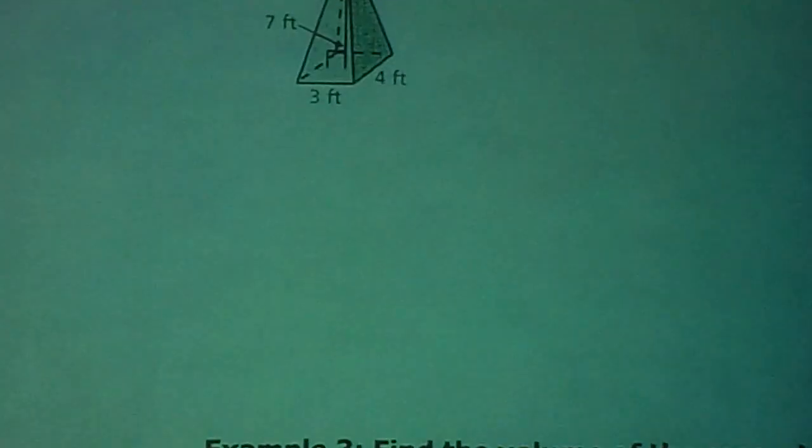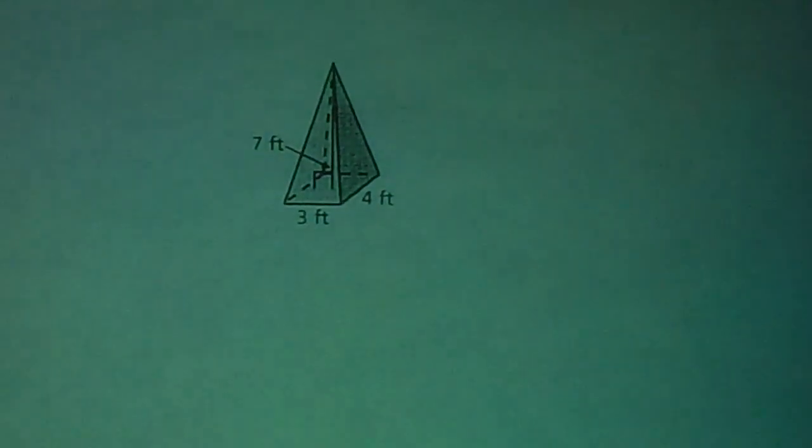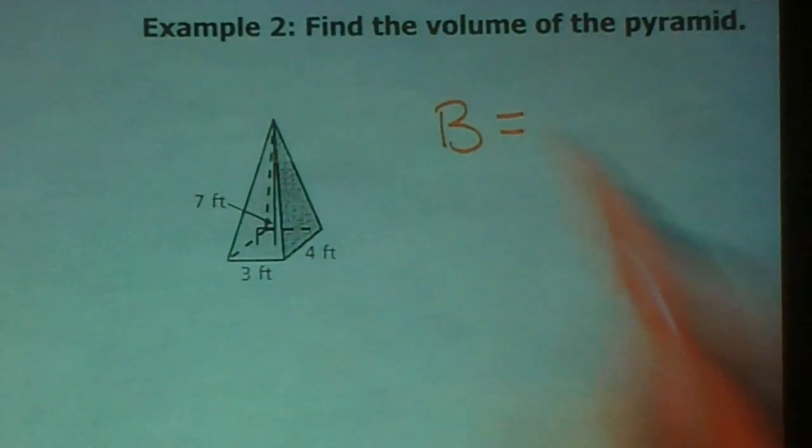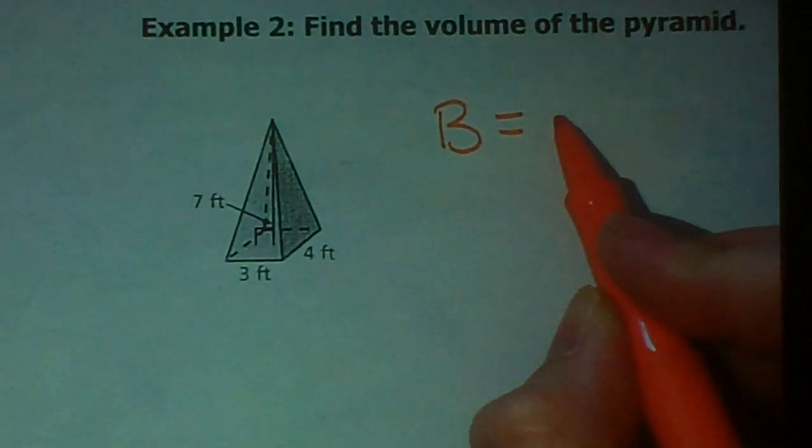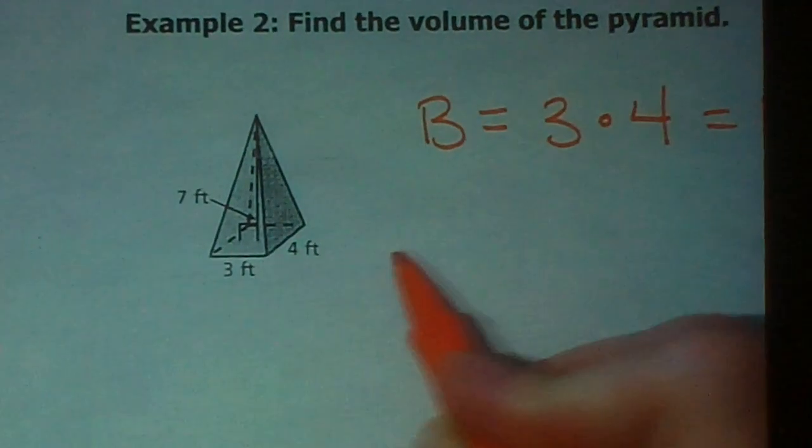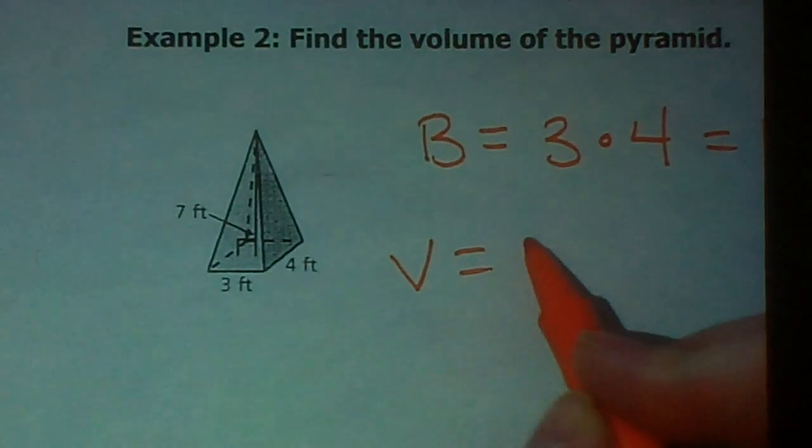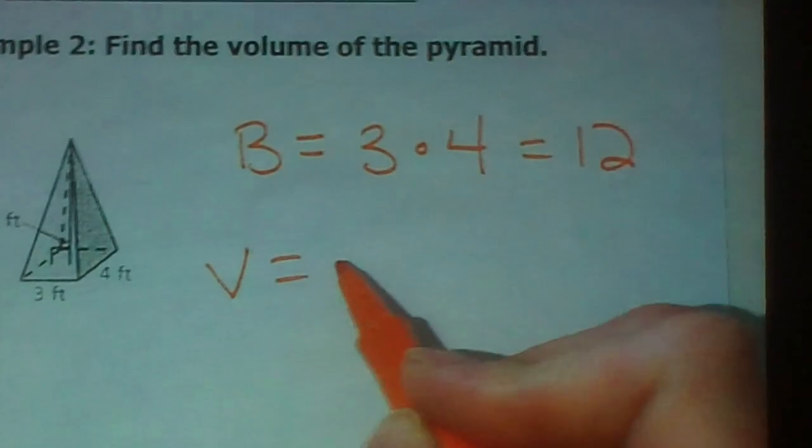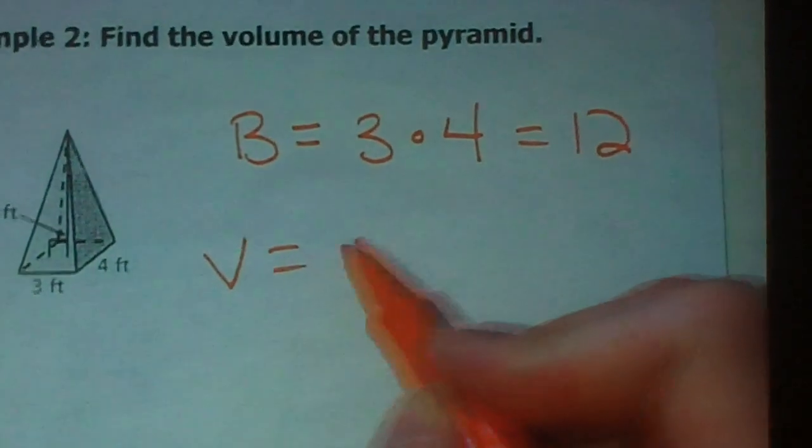All right, let's check out example number 2. Here we have just a nice, plain pyramid. It's got a rectangle on the bottom. So, to find the area of that base, remember, it's a rectangle. We just do length times width. So, 3 times 4, which is 12. So, our volume is big B. Other way. There you go. Got it. Trying to direct me, but we're getting our left and right mixed up. Big B, which is 12, times 7, divide by what you ask? 3.